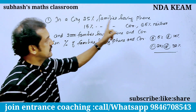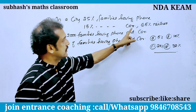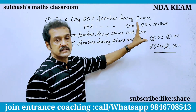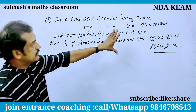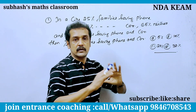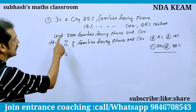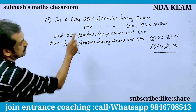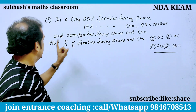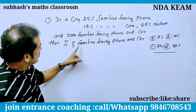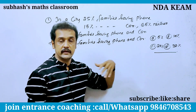In the city, 25% of families have phones, 15% have cars, and 65% of families have phones and cars. 2,000 families have phones and cars. Find the percentage of families that have phones and cars.